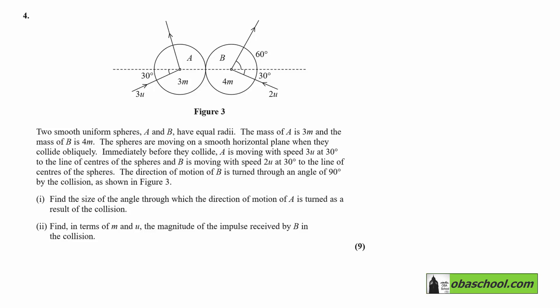The direction of motion of B is turned through an angle of 90 degrees by the collision, as shown in Figure 3. In Part 1 of this question, we want to find the size of the angle through which the direction of motion of A is turned as a result of the collision. I'm going to call that angle theta. So we're now trying to find theta. I'm going to call the speed here V and the speed here W.